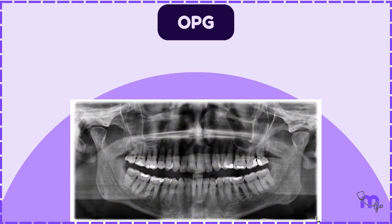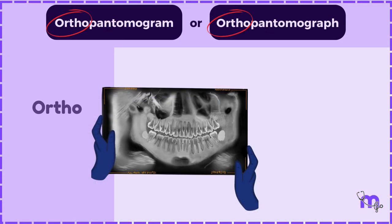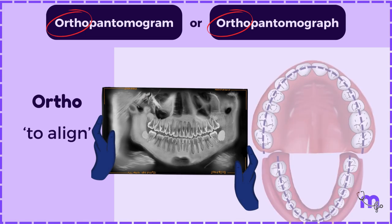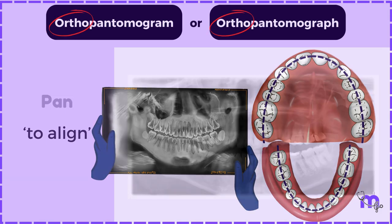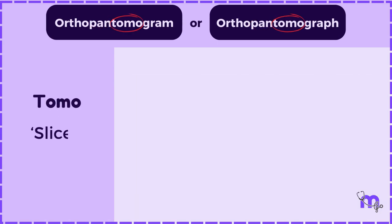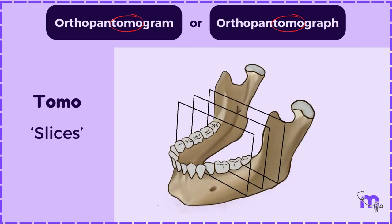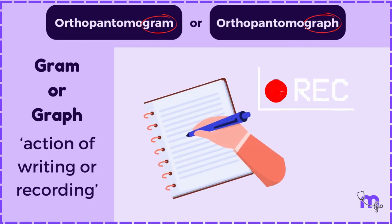OPG is short for Orthopantomogram or Orthopantomograph. Ortho means to align, because teeth and a horseshoe-shaped jaw align in one plane. Pan means a wide view, since the OPG gives us a complete view of both arches. Tomo means slices, as the process of capturing the image involves multiple points of exposure, creating slices of the arches which later combine to form the final image. The term gram or graph refers to the action of writing or recording.